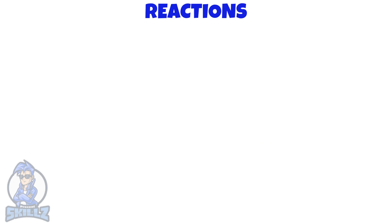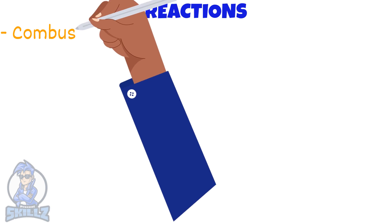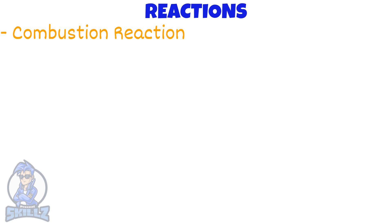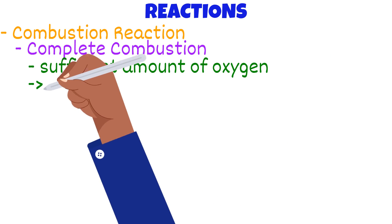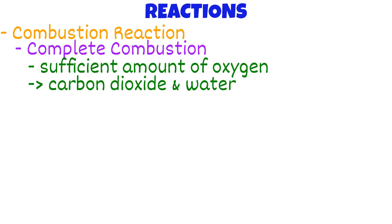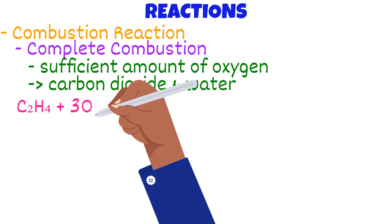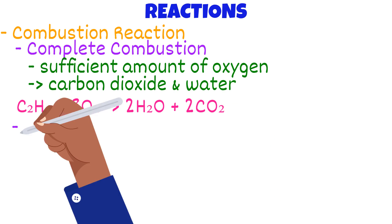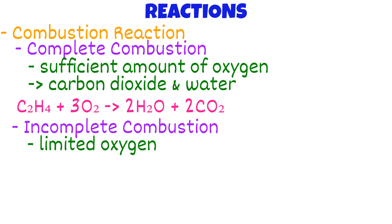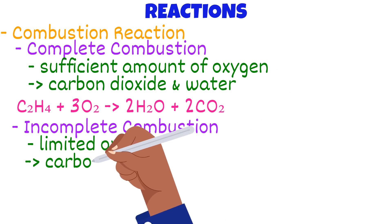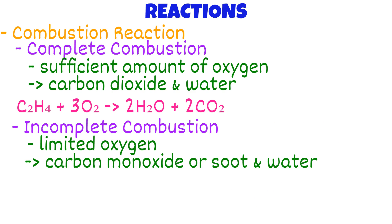Now let's take a look at some reactions involving alkenes. Just like alkanes, alkenes are also involved in combustion reactions. When an alkene reacts with a sufficient amount of oxygen, carbon dioxide and water are produced. Similar to complete combustion, if there is limited oxygen, incomplete combustion occurs. There are similar products but carbon dioxide is replaced by carbon monoxide or carbon soot.